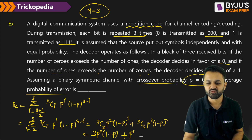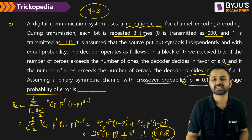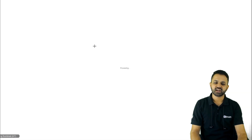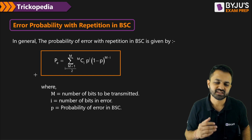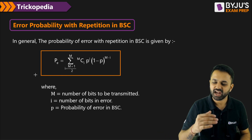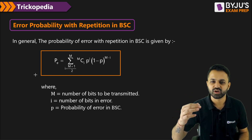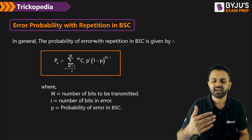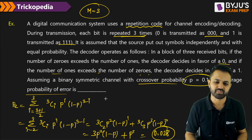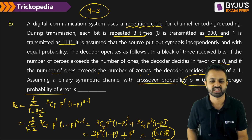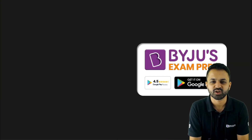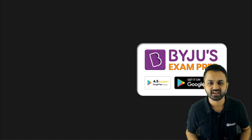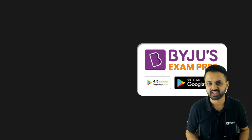Substituting p = 0.1 gives a probability of error of approximately 0.028. This is the trick to calculate the probability of error when there is repetition. Sometimes they will tell you any number of bits are transmitted and ask you to calculate the probability of getting at most 1 bit in error — you can apply this same formula adjusted to the given condition. This is one example asked in the Gate exam. Thank you for watching this Trichopedia session — don't forget to subscribe and stay tuned for more tricks on communication.